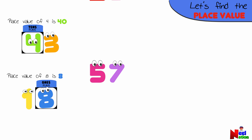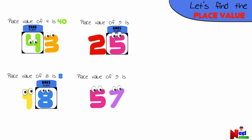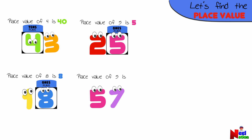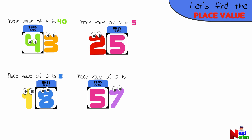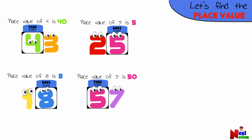Next, we have two numbers: 25 and 57. Can you find the place value of the digit 5 in both these numbers? In number 25, 5 is in the ones place — the place value of 5 in the number 25 is 5. In the number 57, 5 is in the tens place — the place value of 5 is 50. In the numbers 25 and 57, the place value of the digit 5 is different, which tells us that the digit 5 holds a different value in each of these numbers due to its position.